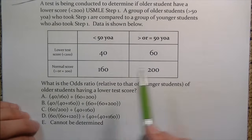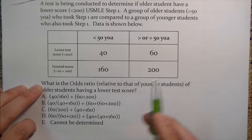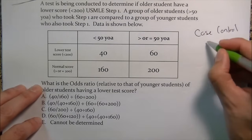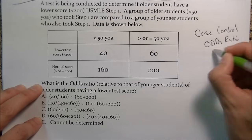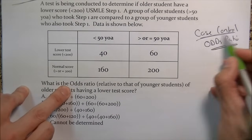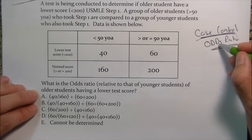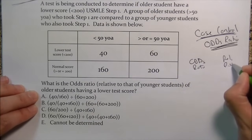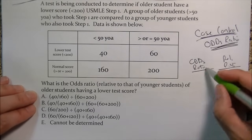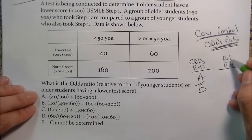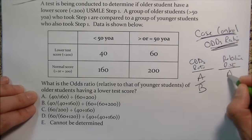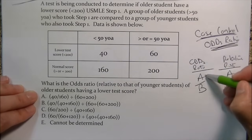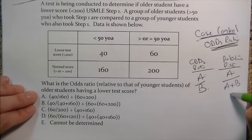Now the same scenario but they ask for the odds ratio. Since it's case control, we always think odds ratio. Odds ratio versus relative risk: think odds like Vegas — one number over one number. Relative risk is one number over two. You do that, you get it right. Read math problems top to bottom, left to right.